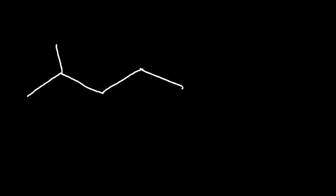Consider this molecule. Which carbon atoms are primary, which ones are secondary, and which ones are tertiary? Let's start with this particular carbon atom. To answer this question, you need to find out how many other carbon atoms are attached to that carbon atom. We have one, two, three. Therefore, this carbon atom is a tertiary carbon atom, since it's attached to three other carbon atoms.